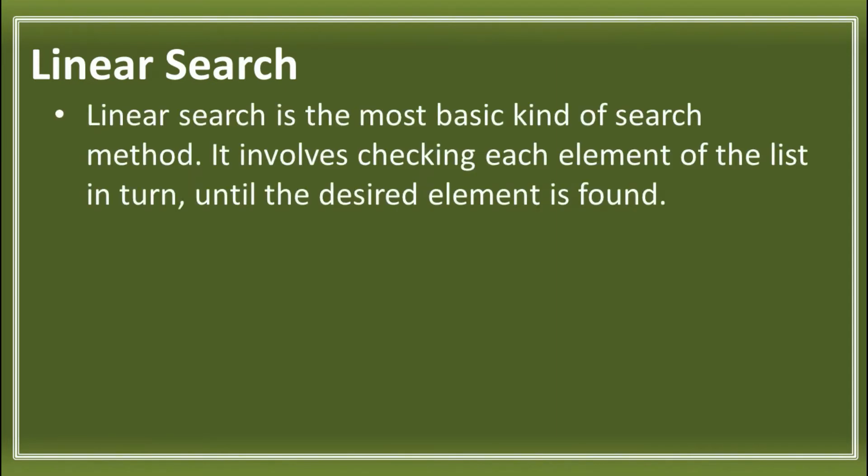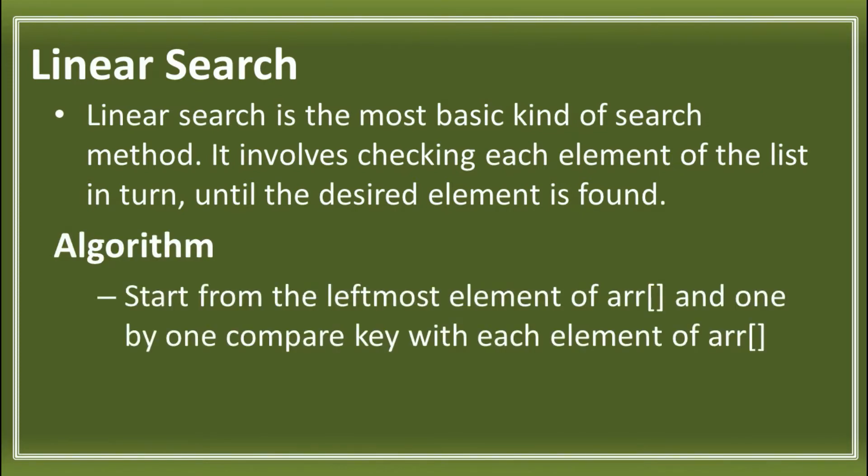First, we have the Linear Search. Linear Search is the most basic kind of searching method. It involves checking each element of the list until the desired element is found. We have this algorithm for a Linear Search: start from the leftmost element of the array and one by one compare the key with the elements of the array.